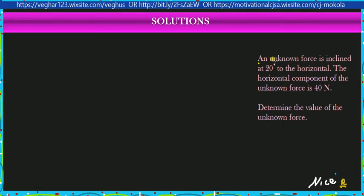The problem states: An unknown force is inclined at 20 degrees to the horizontal. The horizontal component of the unknown force is 40 Newton. Determine the value of the unknown force.